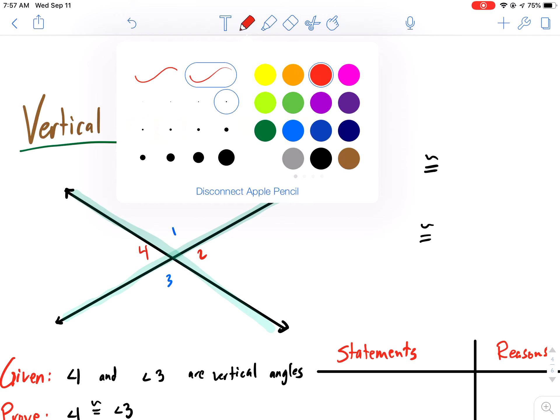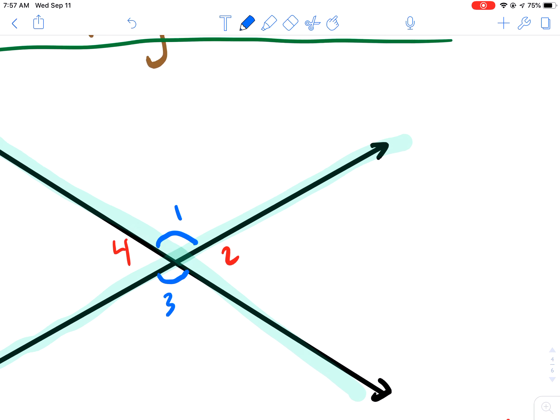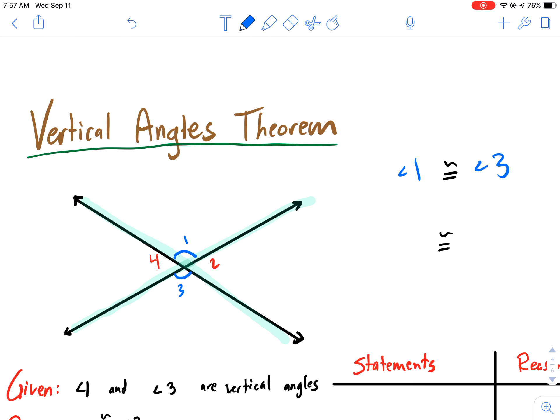So vertical angles, what do we know about them? We know that they are congruent. So angle 1 and angle 3 are congruent. They are the same, so I'm going to designate this with a single ribbon here. Now remember, we don't really deal with colors when we're dealing with math, but we do deal with the number of lines.